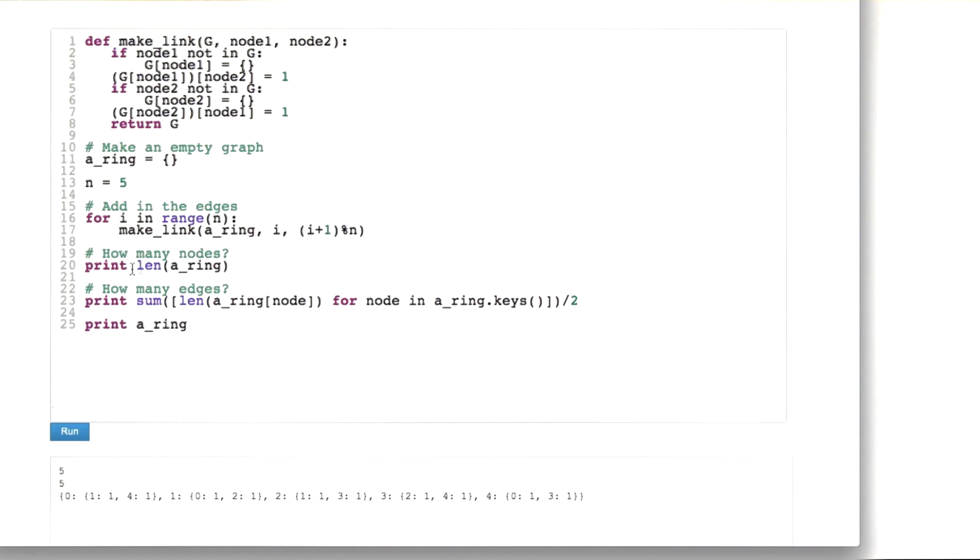So once we've created that dictionary, we can ask questions like, well how many nodes are in the graph? And how many edges are in the graph? So I actually ran this already, and you can see that the number of nodes is indeed 5, which is good, because that's what we wanted it to be.